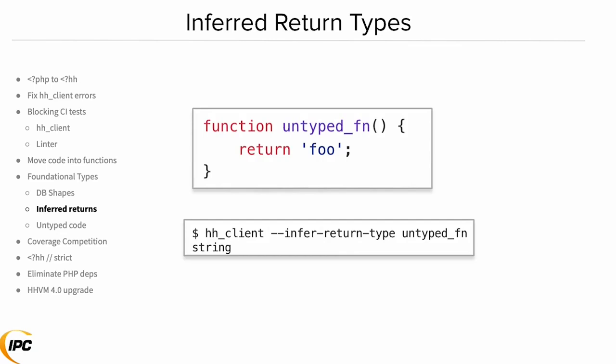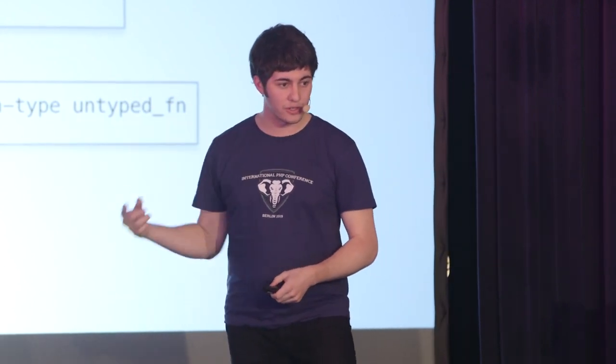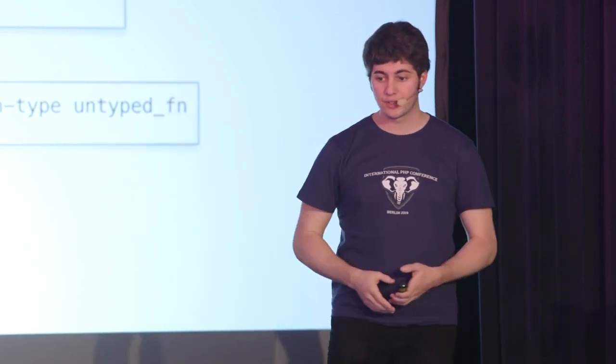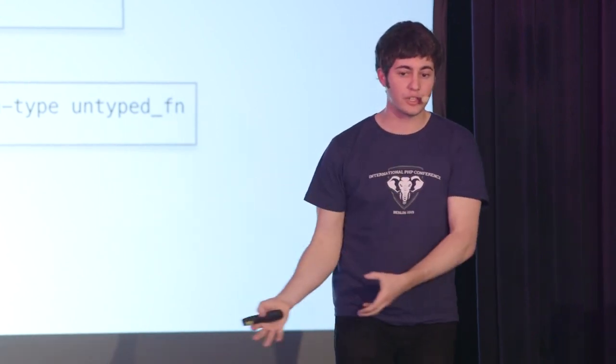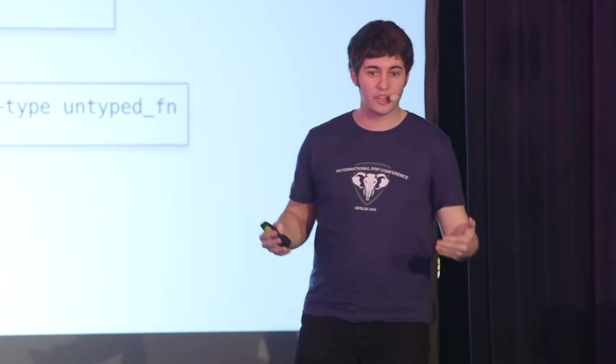There's another way to get foundational types: there's a thing in HHClient called infer return type. You can ask it what it thinks the return type of a function is and it will try to guess. If it's returning a hard-coded value, the result of a comparison, or something from a built-in function that has a return type, you'll often get the return type for free — Hack will just tell you this function returns a string. If it doesn't know, it'll say dash. We made a script that ran this for every function in the code base and added all the easy ones. We focused on return types first, not argument types — this is something I learned doing this — because return types give you a type that's useful in all the call sites, whereas argument types only help within the function body. You get more bang for your typing buck by focusing on return types first.